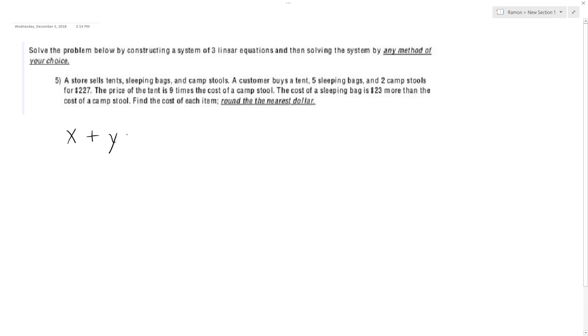So we'll have x plus y plus z equals— actually, not a mistake. So there's going to be five sleeping bags, so x plus five y plus two camp stools for 227.